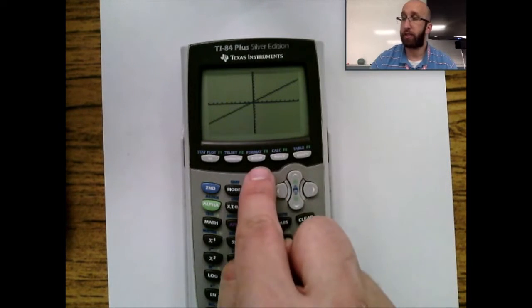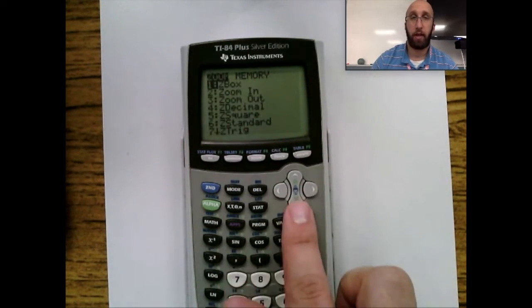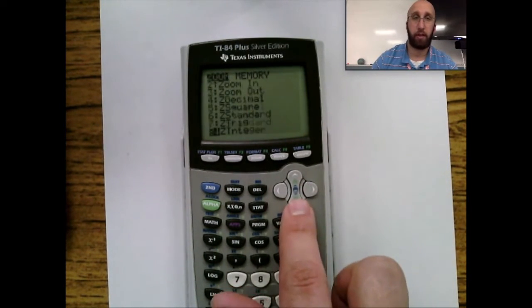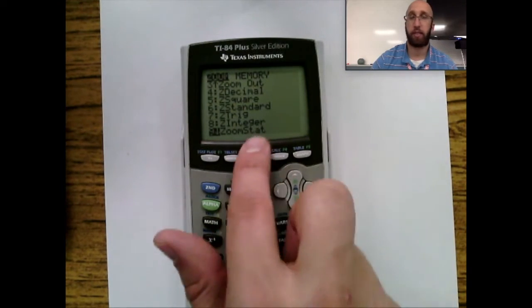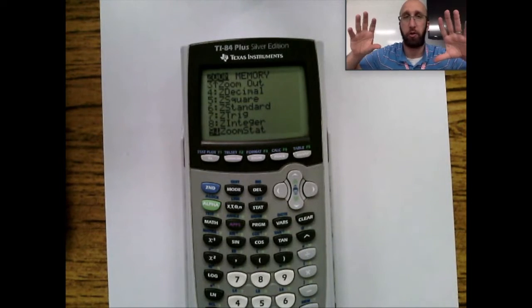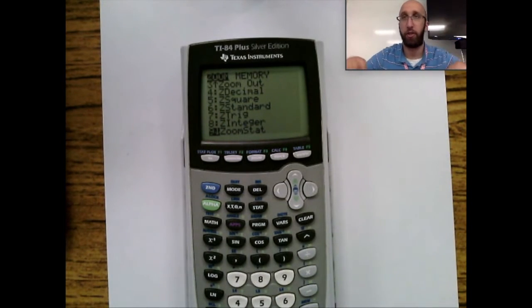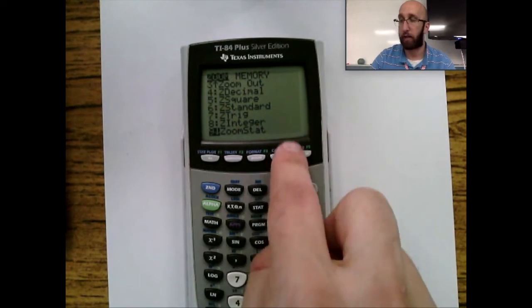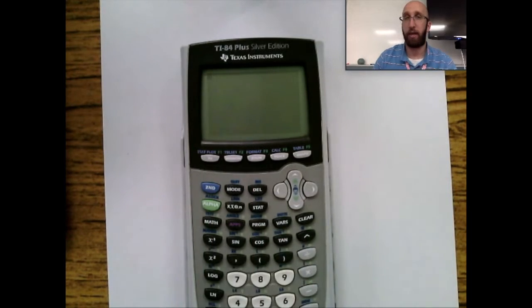To actually see your graph, you're going to hit ZOOM, and then the ninth option there is STAT. And what that's going to do is it's going to zoom in on your scatter plot, it's going to zoom in and show your histogram, it's going to zoom in and show your box and whisker plot. So ZOOM STAT.